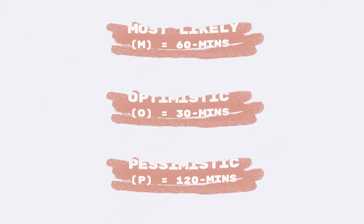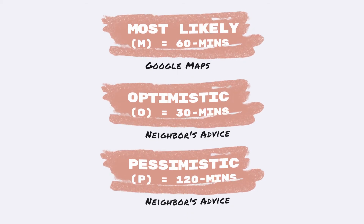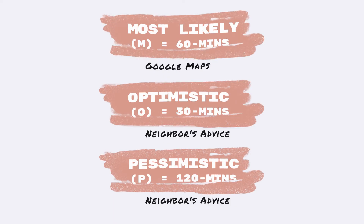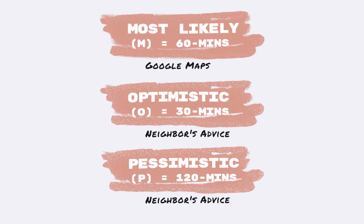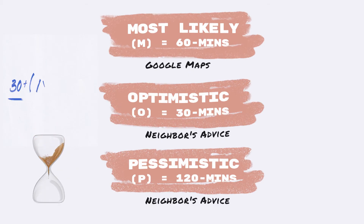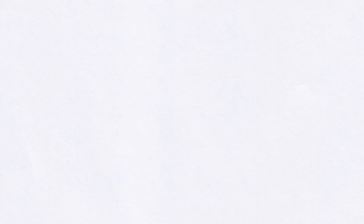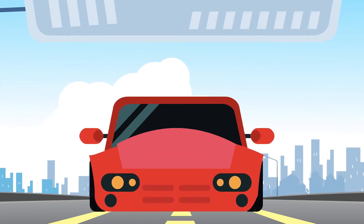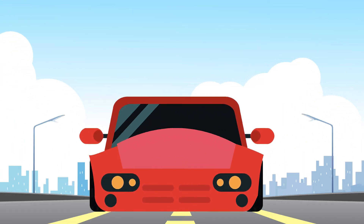Going back to our earlier example, if we plug in the values we collected from Google Maps and our neighbor, we can calculate the weighted average. Go ahead and pause the video and do that now. The answer is 65 minutes. When your first day of work comes around, you can plan for the trip to take approximately 65 minutes, which should keep you from being late.